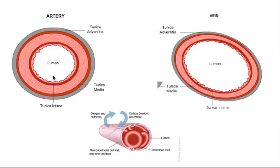The smooth muscle surrounding the artery enables the diameter to be decreased and increased as required. So if blood is pumping at a really fast rate it would increase, and if blood is not pumping as fast then it can decrease to reduce this diameter here, which is the lumen.